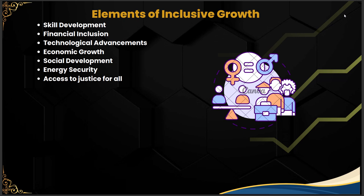Energy security — providing enough affordable and uninterrupted energy for sustained economic activities — will benefit economic growth. Finally, access to justice for all, meaning affordable access to formal and informal justice systems, is crucial for addressing grievances among the population. All these elements combined together form the elements of inclusive growth.